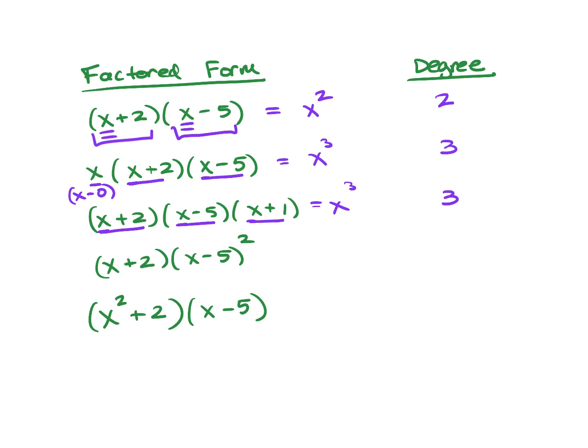And this problem, this is a little more tricky. Since there's a square here, that means there's actually 2 of these. So you can rewrite this problem as x plus 2 times x minus 5 times x minus 5. And now you have 1, 2, 3 factors. It's also degree 3, because it's x times x times x.